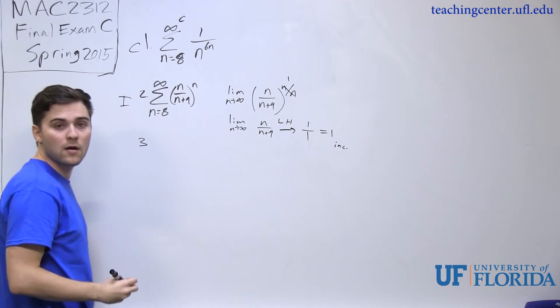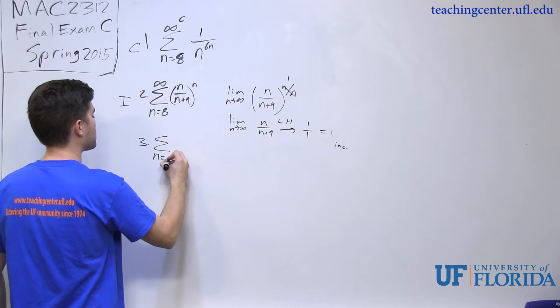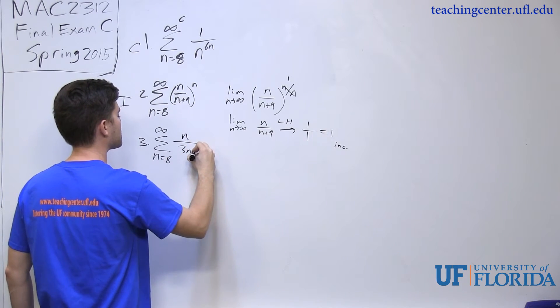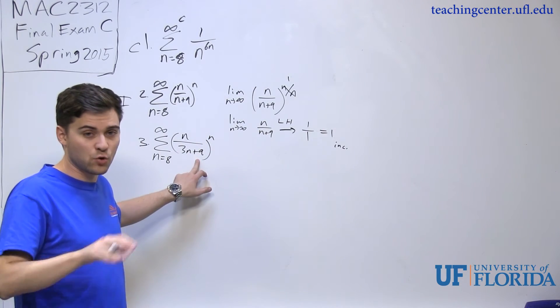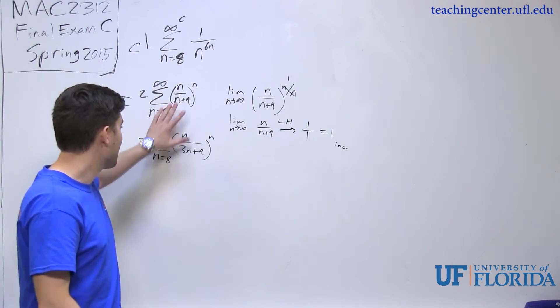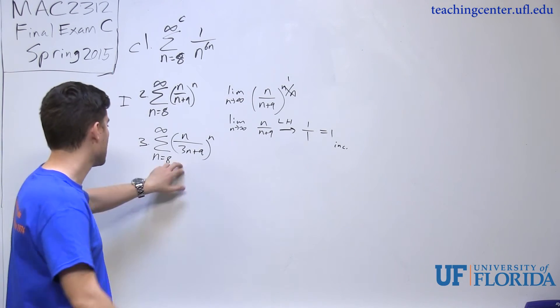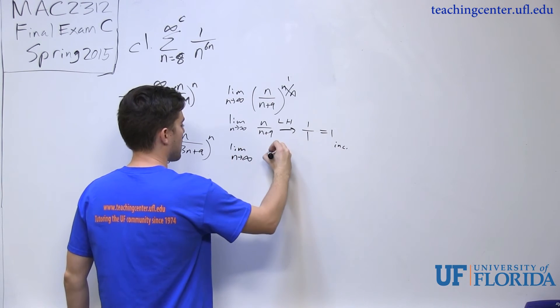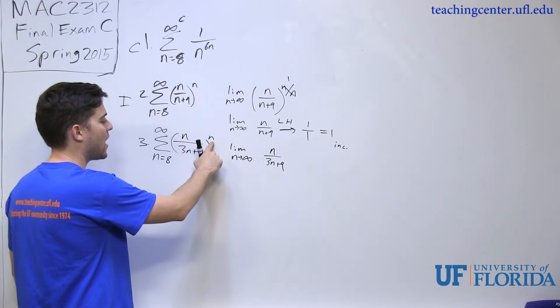Now number 3 is summation n equals 8 to infinity of n over 3n plus 9 to the n power. Again, apply root test to it. And that's the only thing we're applying. We're not actually looking to see if we can prove convergence or divergence another way. If it doesn't work with root test, we just leave it. So now if I apply root test again, limit as n approaches infinity of n over 3n plus 9, and that would be to a 1 over n power.